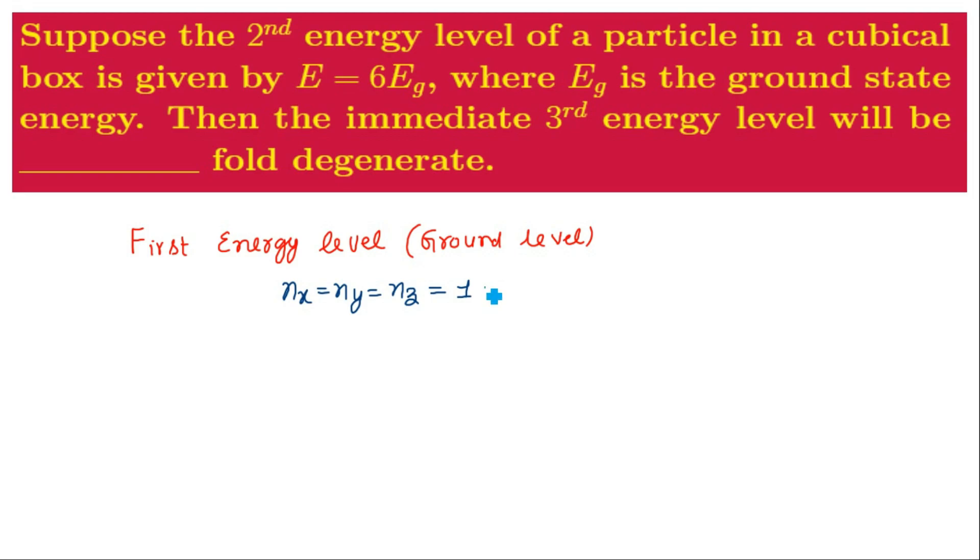Each of them should be 1, and the energy obtained for this minimum level will be 1 squared plus 1 squared plus 1 squared times EG, which becomes 3EG. So this energy eigenvalue has no degeneracy. So it is a non-degenerate state because there is only one possible combination of NX, NY, and NZ to obtain this energy.